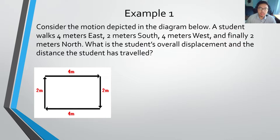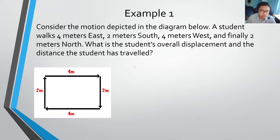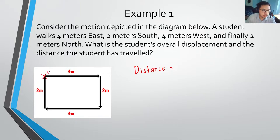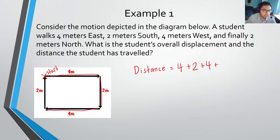Let's look at example one. Consider the motion depicted in the diagram below. A student walks 4 meters east, 2 meters south, 4 meters west, and finally 2 meters north. What is the student's overall displacement and the distance traveled? Distance is the most straightforward — it's basically how much the student traveled in total: 4 plus 2 plus 4 plus 2 meters, which gives a total distance of 12 meters.